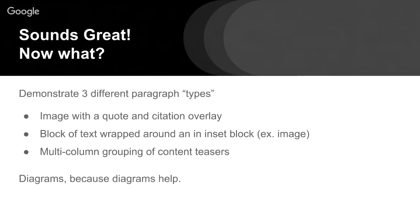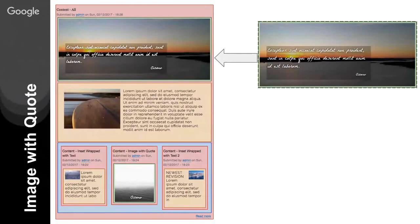We're going to talk about three different paragraph types that I kind of just picked out of thin air. There are a lot of different modules out there with example paragraphs. I'll have some links toward the end of the presentation. We're going to deal with: an image with a quote and citation overlay — basically a landscape image with a quote and its citation laid on top; a block of text wrapped around an inset, which is float left or float right; and then a multi-column grouping of content teasers, which is a paragraph referencing teasers of other content-type entities. That's going to be the more complicated one.